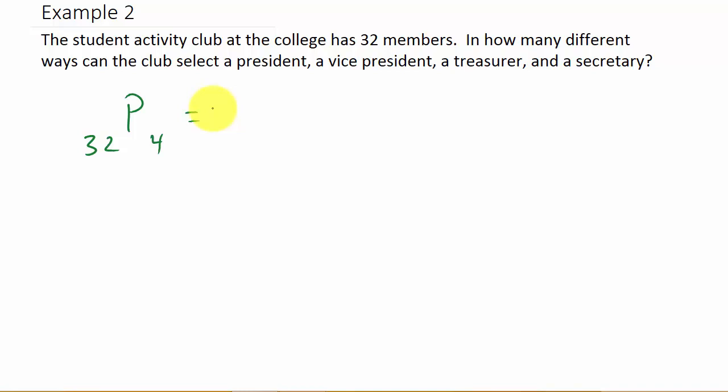You can plug it into the formula if you want, but I'm just going to punch it into my calculator. I'm going to hit 32, the PRB, the permutation is already underlined so I hit enter, then I'm choosing four so I type in four and that equals 863,040.